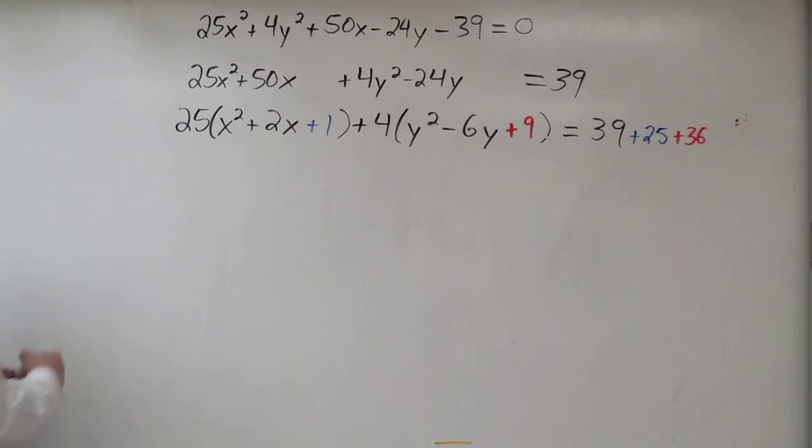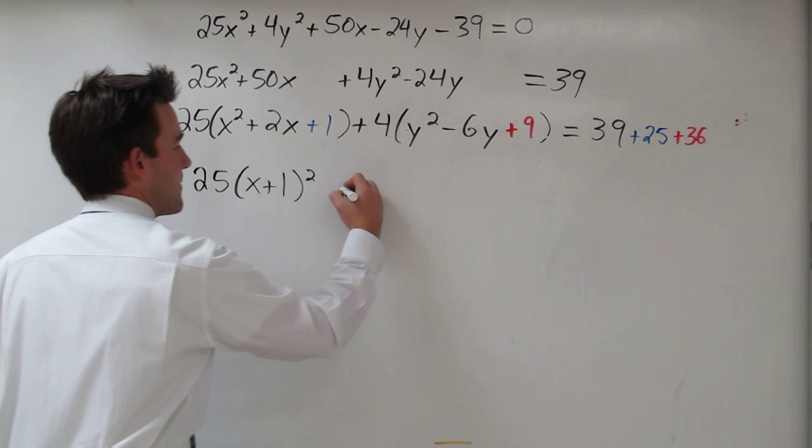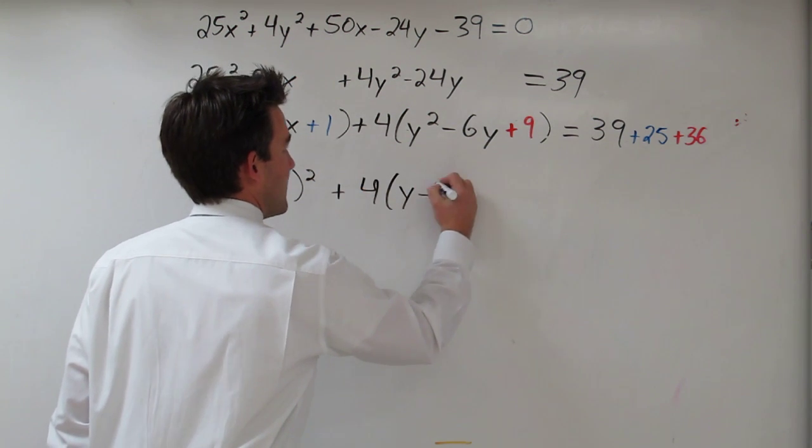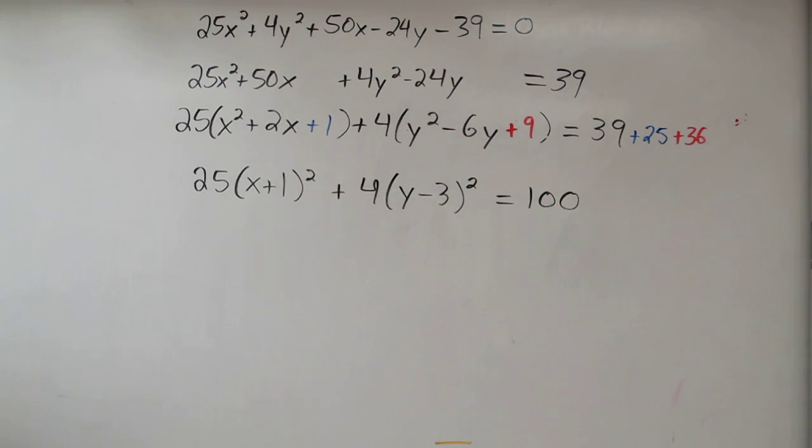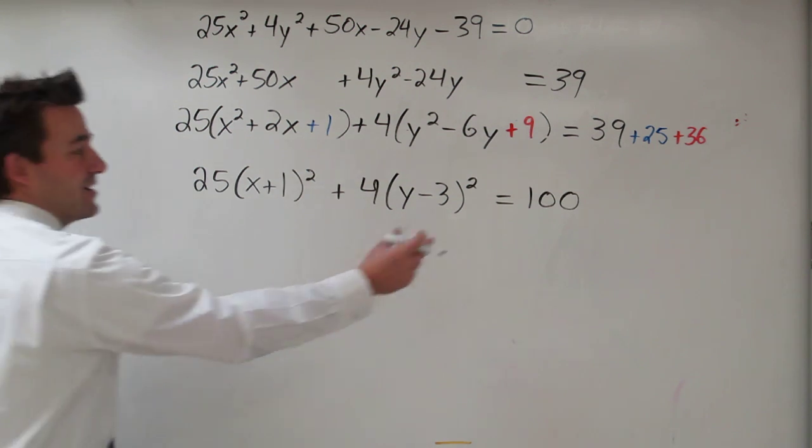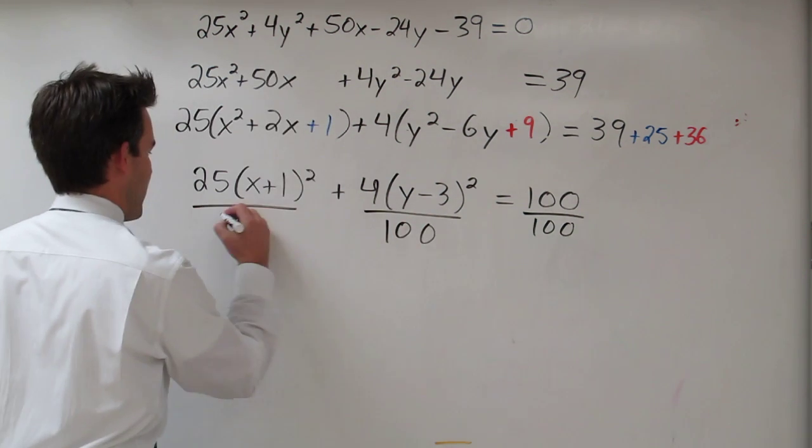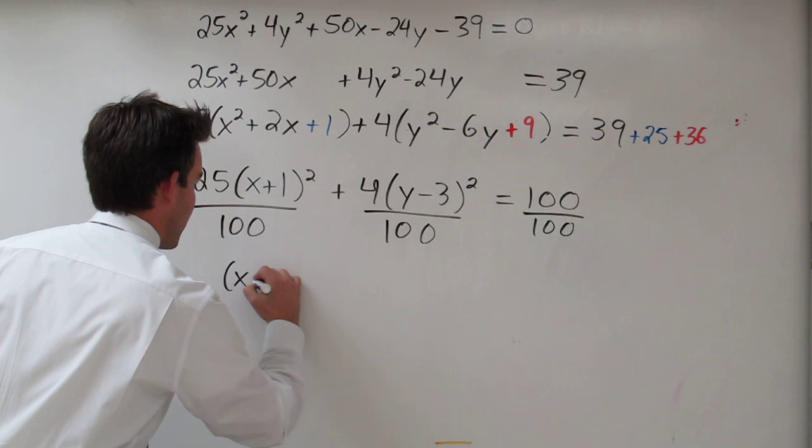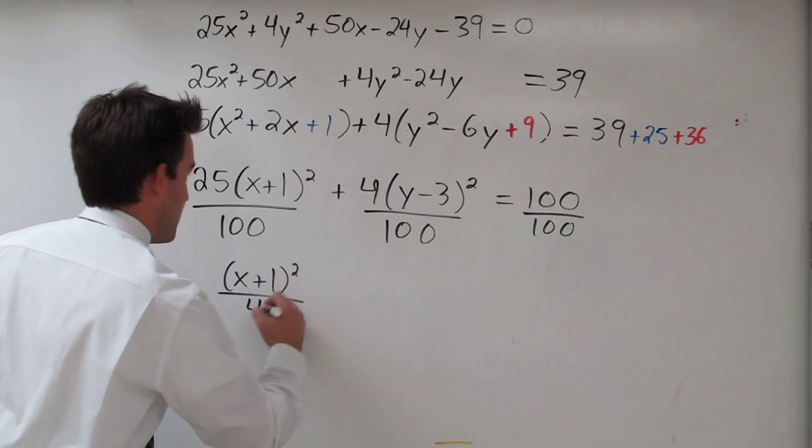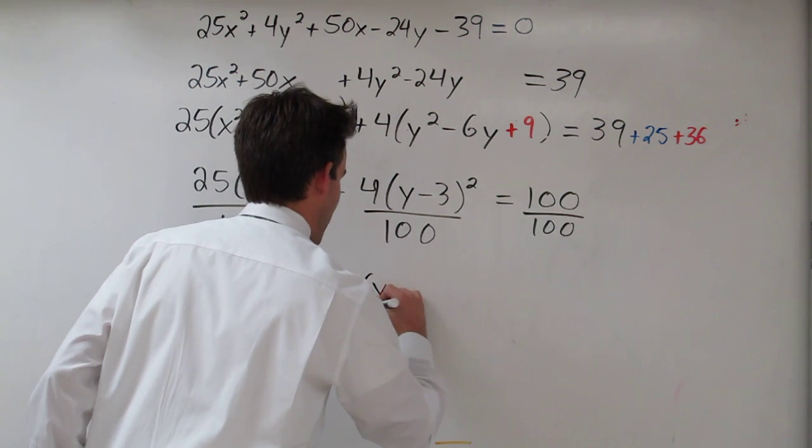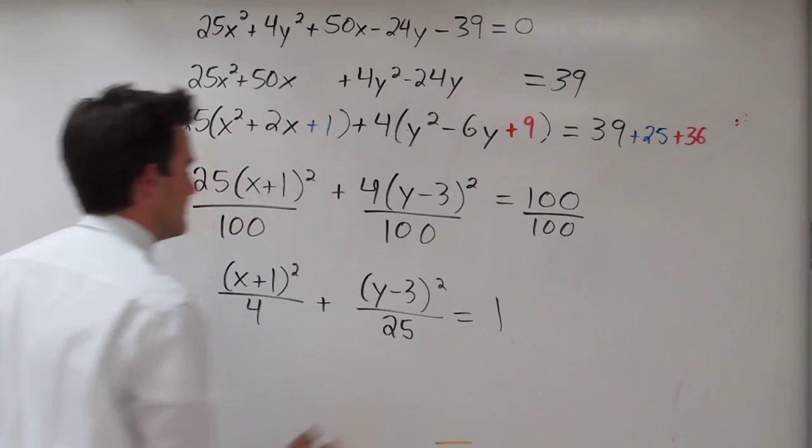Next, let's just simplify. And looks like we have an ellipse again. And then I need to divide both sides by 100 to get that 1 on this side.